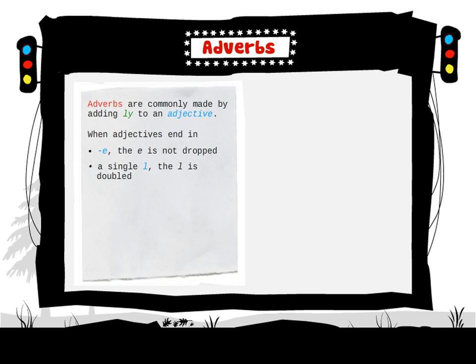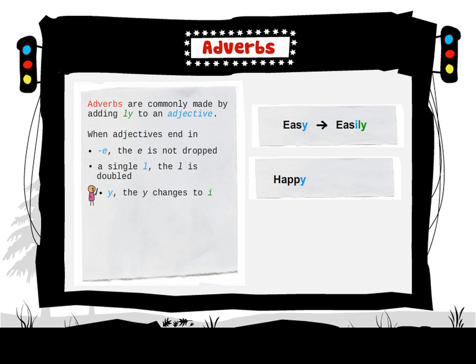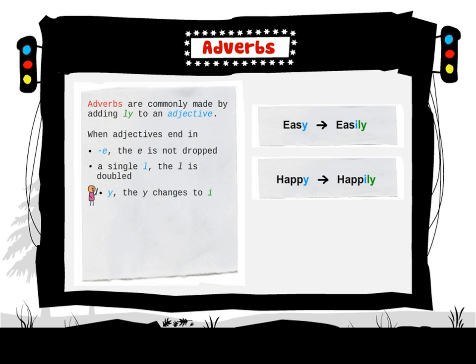When adjectives end in -y, the y changes to i. For example: easy → easily, happy → happily, lazy → lazily.